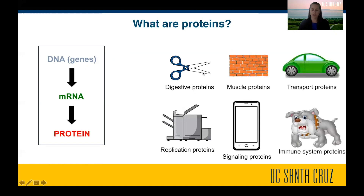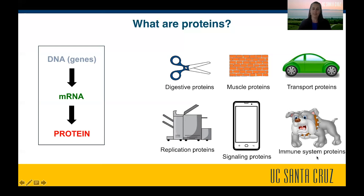Proteins are really the worker molecules in our body. We have digestive proteins that help us digest food, proteins that keep our muscles together and functioning, transport proteins that bring molecules throughout our body, replication proteins that replicate our DNA, signaling proteins such as insulin that tells our other cells when to take up glucose, and immune system proteins in our bloodstream that help us fight off infections.